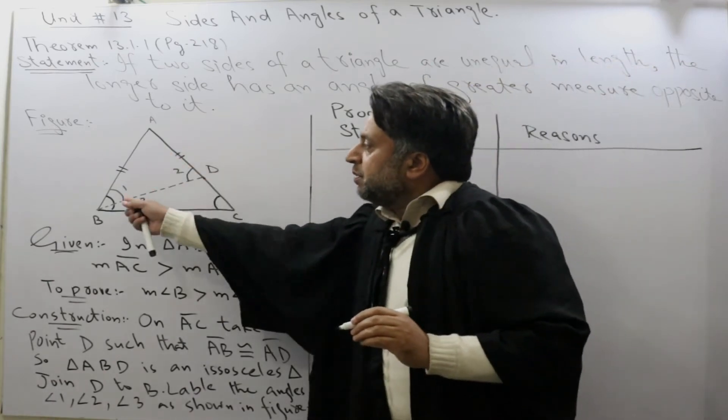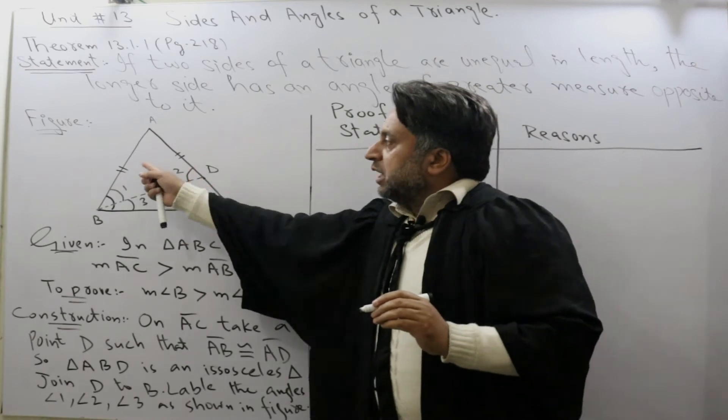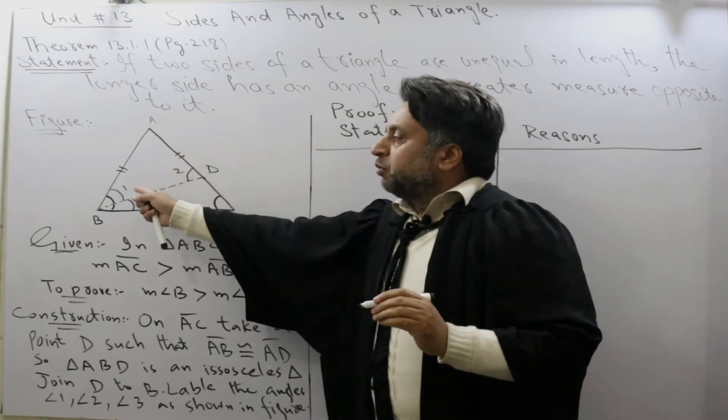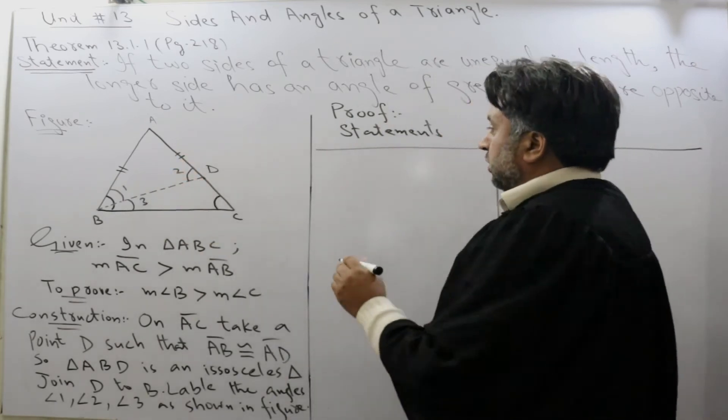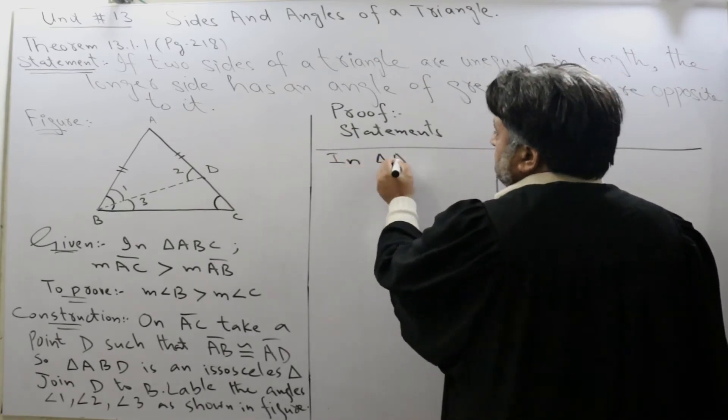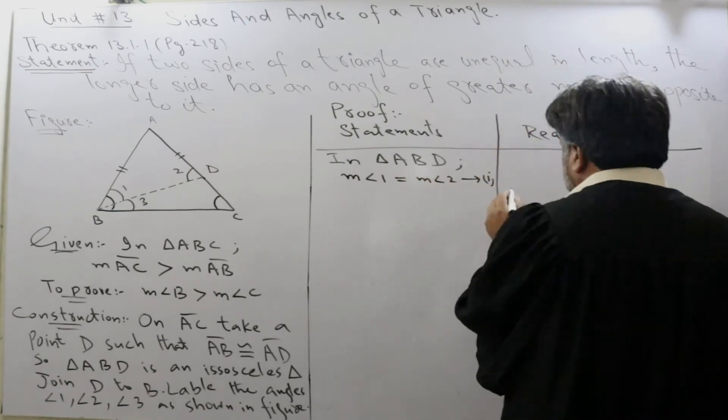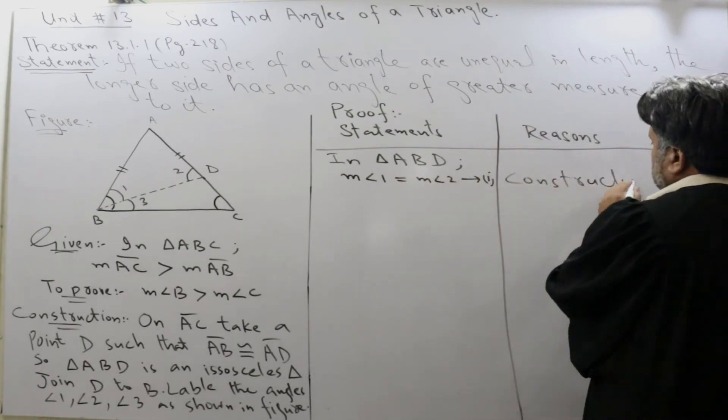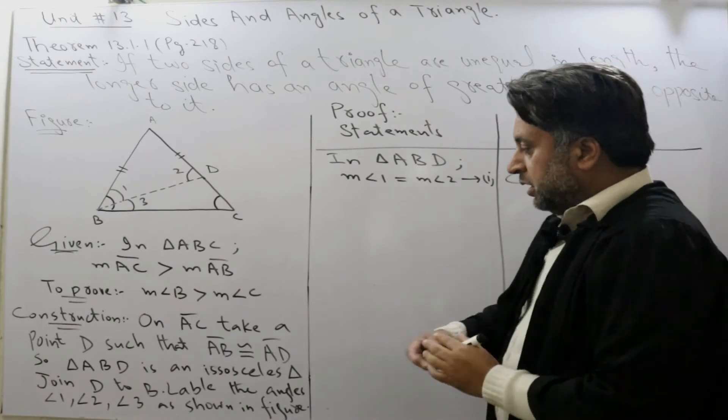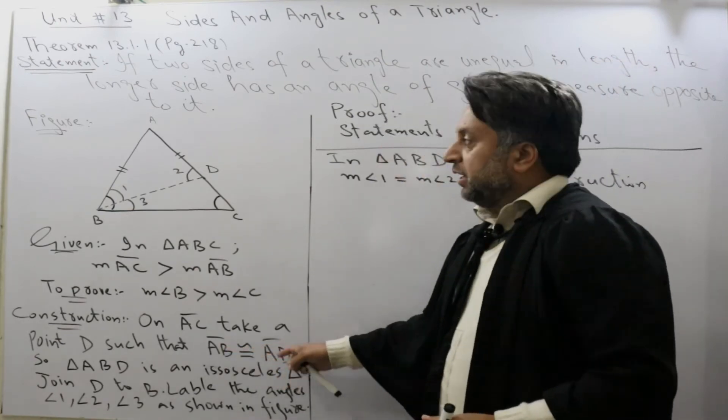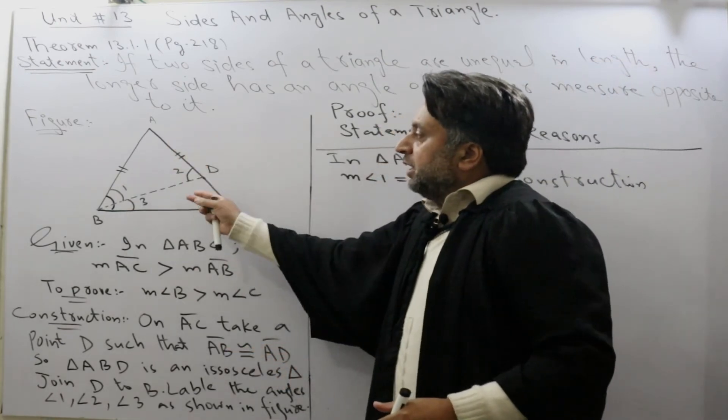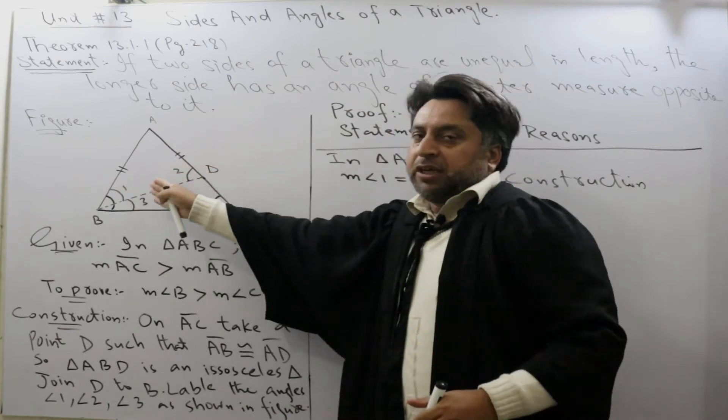In triangle ABD, when two sides are congruent then its opposite angles are also congruent. From construction, AB is congruent to AD. It means that its opposite angles are also congruent or equal.